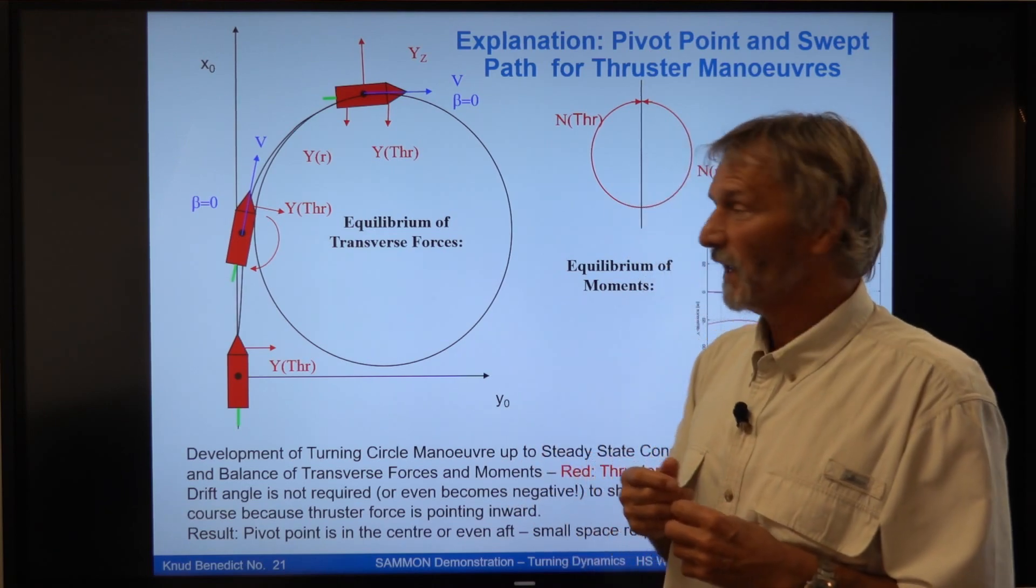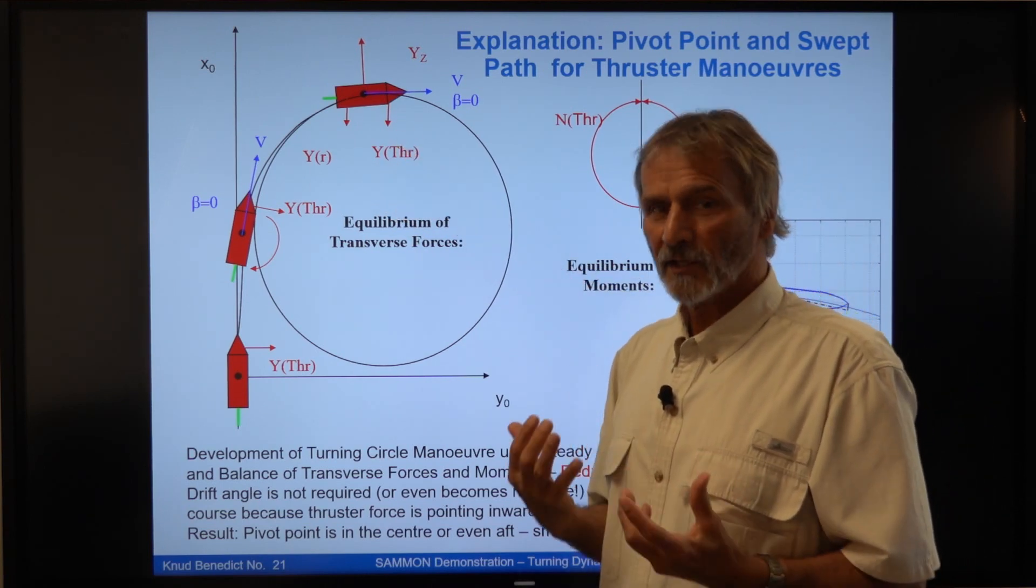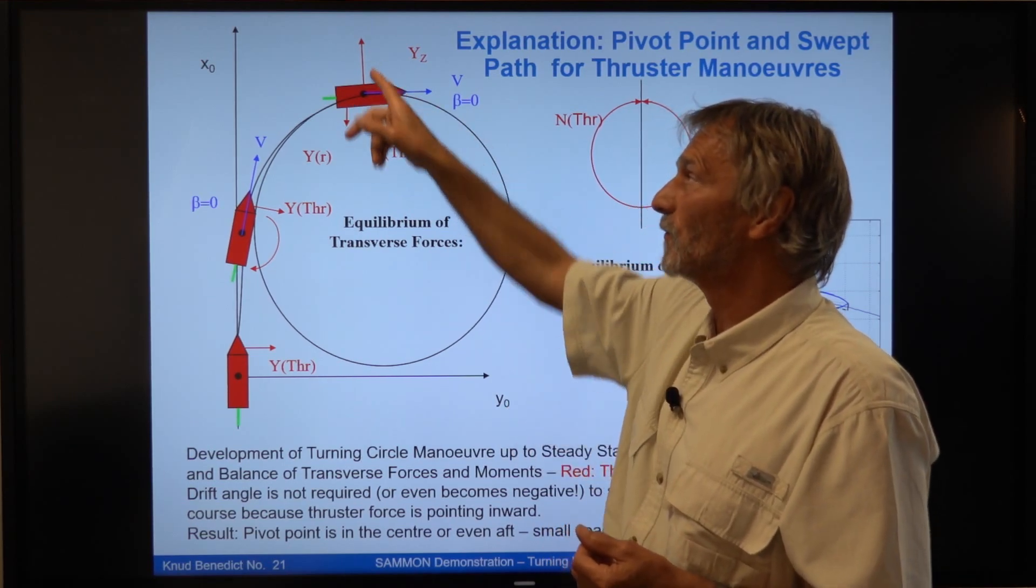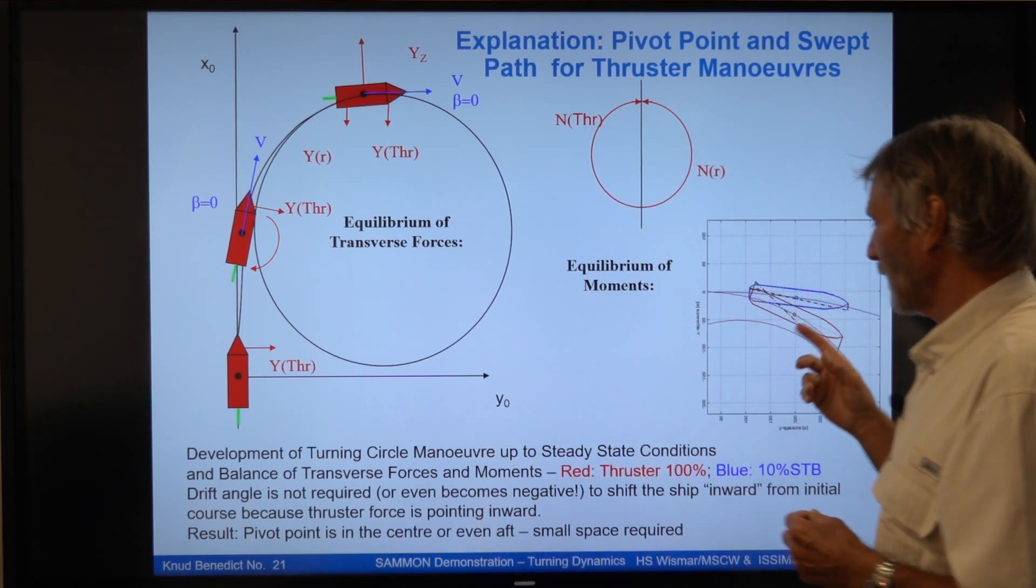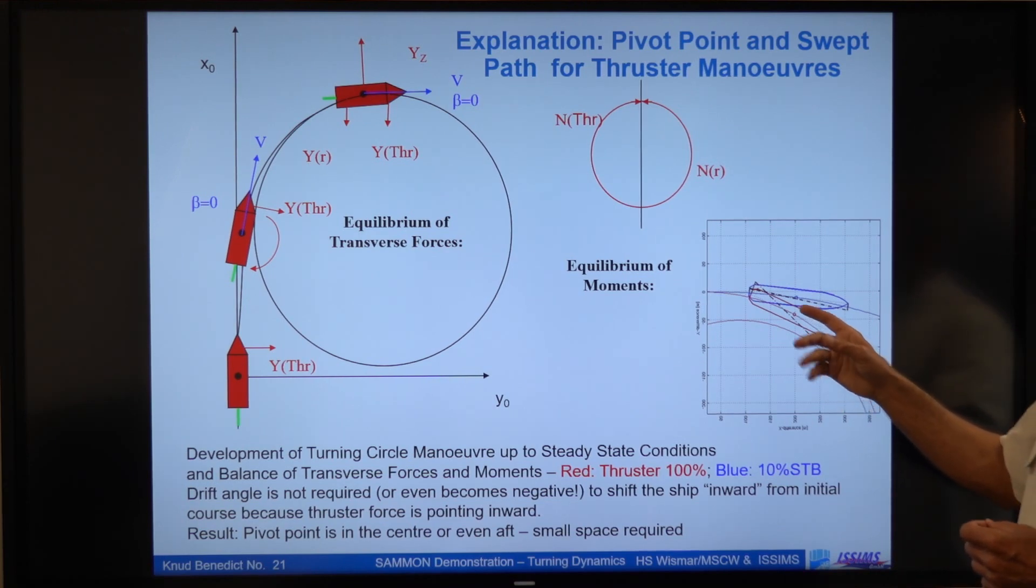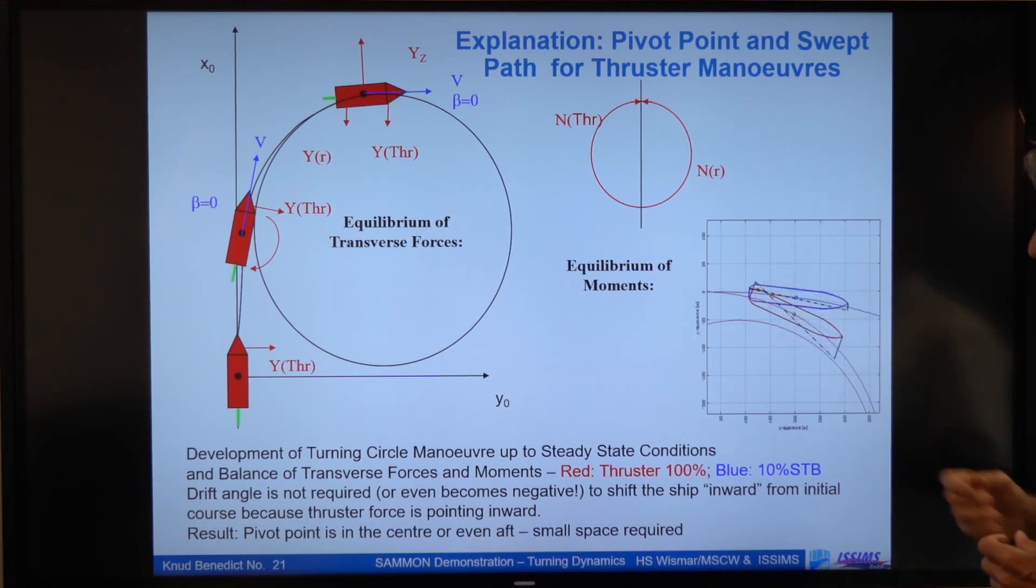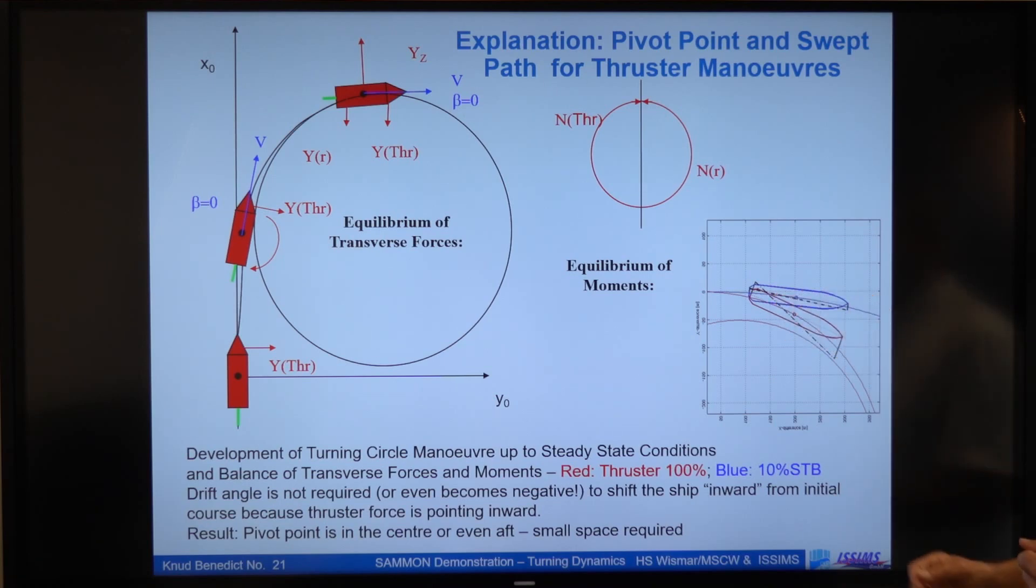It only comes into the play if the thruster force might be too big. So the other forces, the centrifugal forces cannot balance the force. Then you might even get, like it's indicated here, a drift angle which is negative. That means the bow points out of the turning circle. You see here the sample, the red one is the thruster with 100%, so there's a drift angle outward, and with 10% is nearly zero.